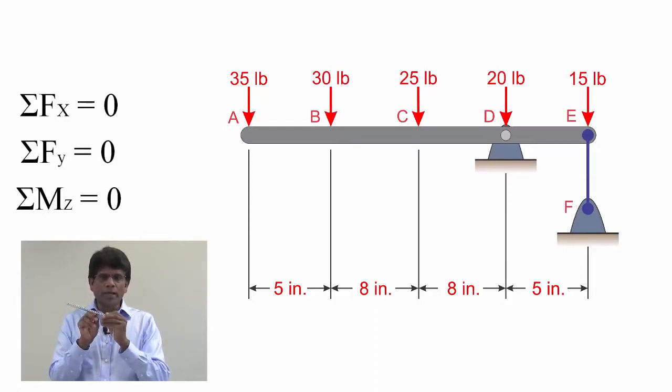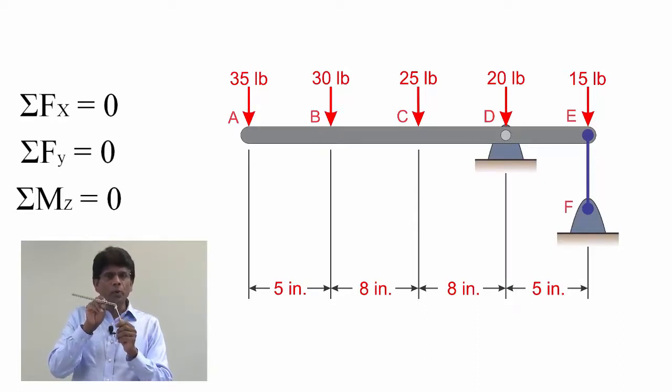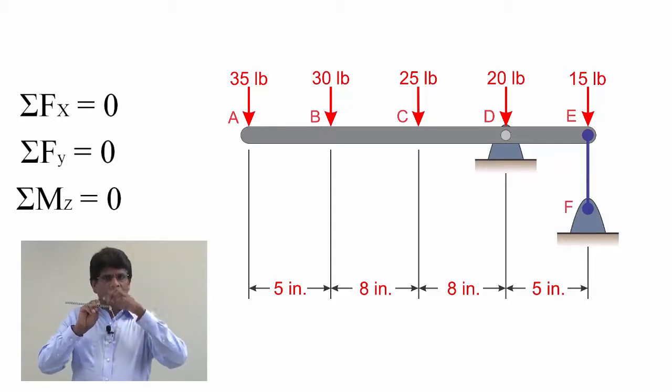This beam is supported by a pin joint at D and a cable at point E. Our goal is to determine the support reactions. As you can see, there are three support reactions here: two reactions at the pin and the tension on the cable.